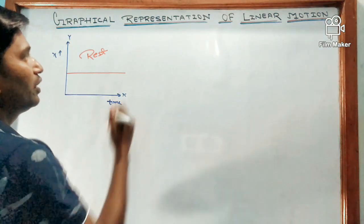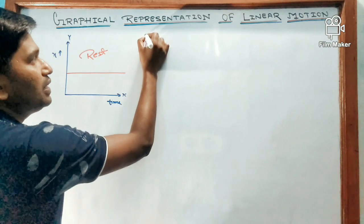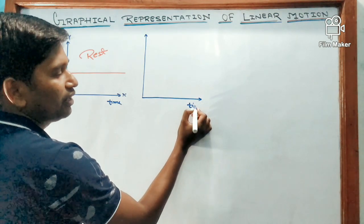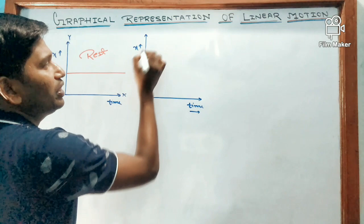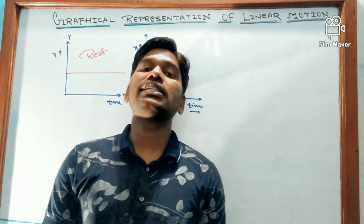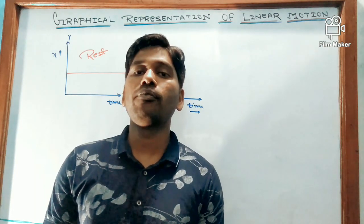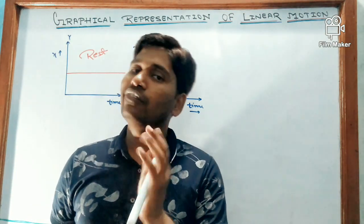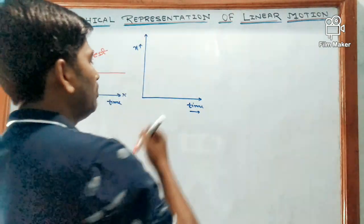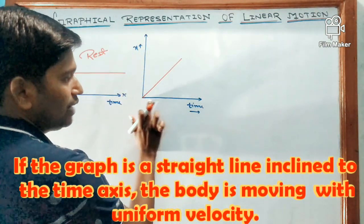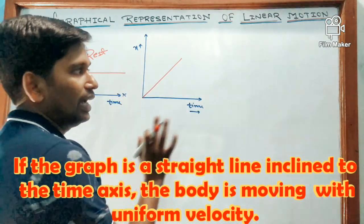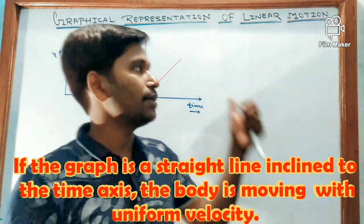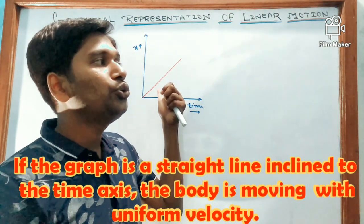The second graph: if displacement is directly proportional to time, or if displacement is changing along with time, then the body is said to be moving with uniform velocity or constant velocity. The graph shows time changing and displacement changing with equal change in displacement in equal intervals of time, representing uniform velocity.